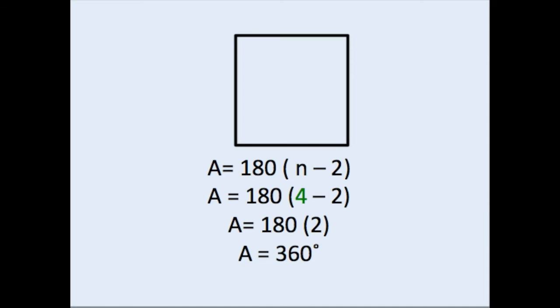Next, we have a quadrilateral, or what may seem more familiar to you is a square in this example. Once again, we start off with our original formula, A equals 180 times n minus 2. Substitute in the number of sides, which is 1, 2, 3, 4. Then we can do 4 minus 2, which is equal to 2, and 2 times 180, which is equal to 360 degrees. Note that even though this one is a square, if it was a rectangle or any other quadrilateral for that matter, any quadrilateral or four-sided figure would be 360 degrees.